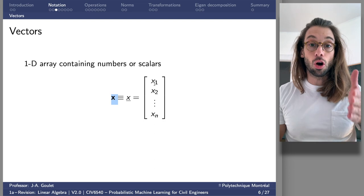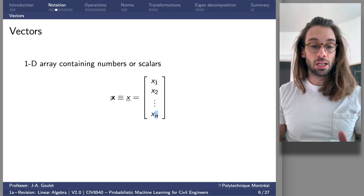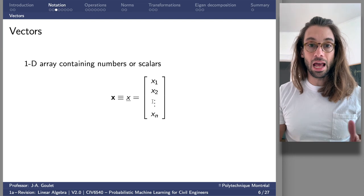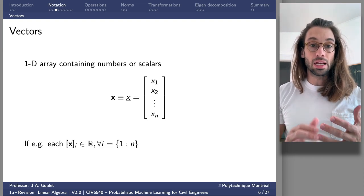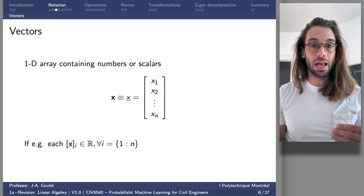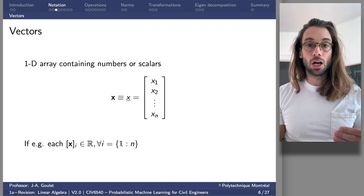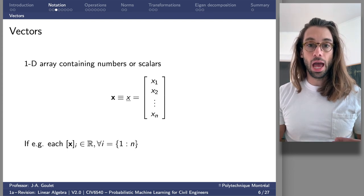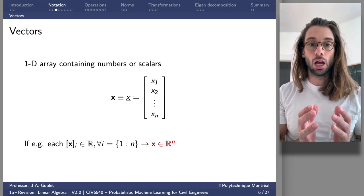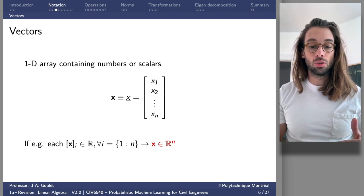Vectors by definition are always columns. If I have n terms in my column vector, that x bold or x with the underline would be that n-element vector. To access the i-th element from that vector, I use brackets to say I'm referring to the i-th element of my x vector, and that element belongs to the real space for all i belonging to the set from 1 up to n. Equivalently, we can say vector x belongs to the real space in n dimensions.